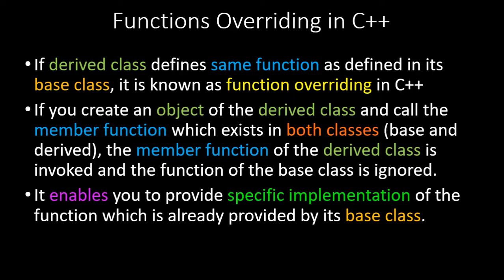In inheritance, we have a base class and the properties inside the public and protected sections are inherited in the derived class. If a derived class defines the same function as the base class — recreating that function and giving it a different functionality — that is a case of function overriding.